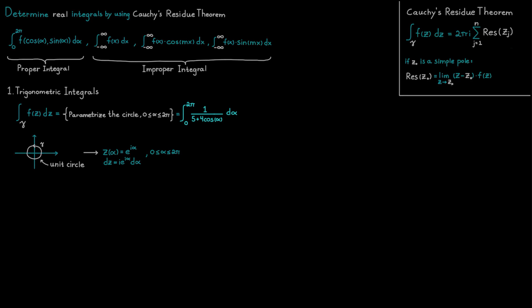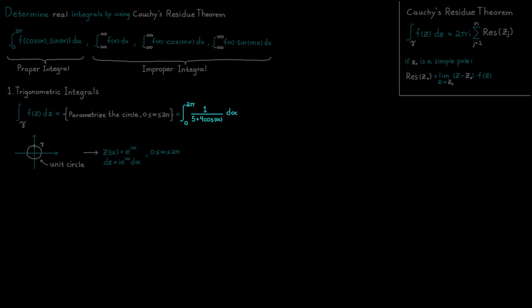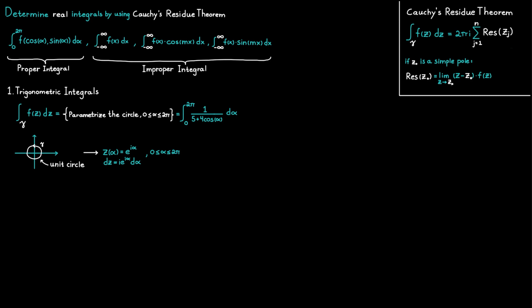We want to take everything inside of our integral and express it in terms of our parameterized variable z (c). Starting with cosine: using the trigonometric identities for cosine and sine, and noting that e raised to the power of i times alpha equals z under this parameterization, we can rewrite cosine and sine so they only depend on z. Also, e raised to the power of minus i alpha becomes one divided by z. Additionally, from the parameterization, d alpha equals dz divided by i times z.